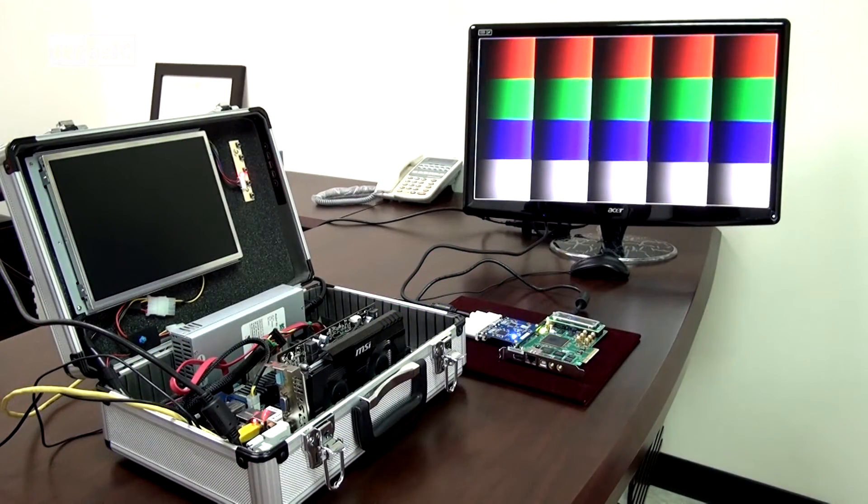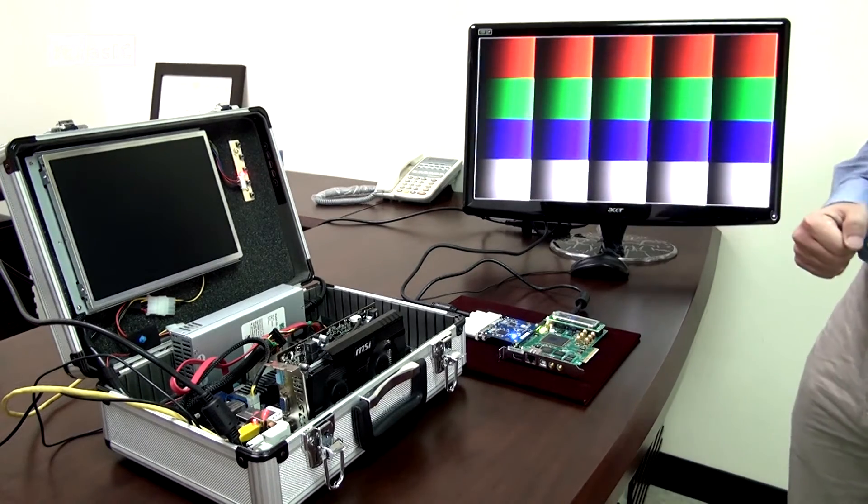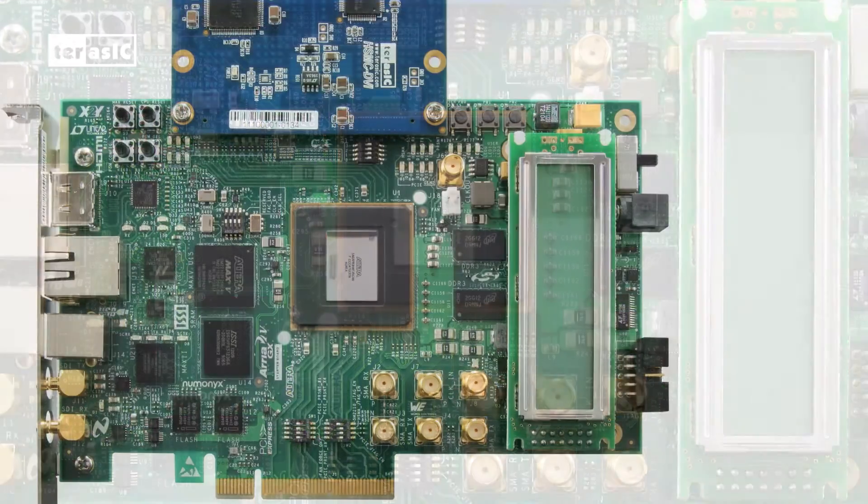So here you can see we have an example of our bundled solution, a video development kit. Over here we have paired an Altera Area 5 development kit with our DVI daughter card.